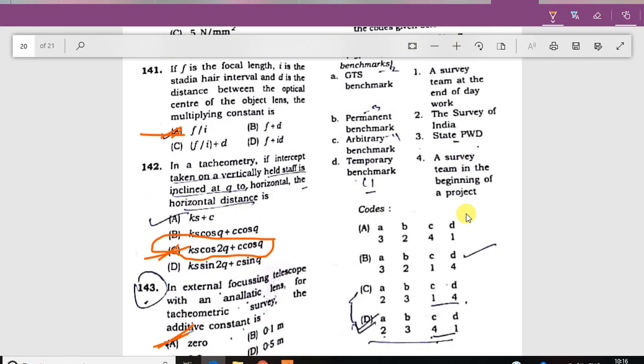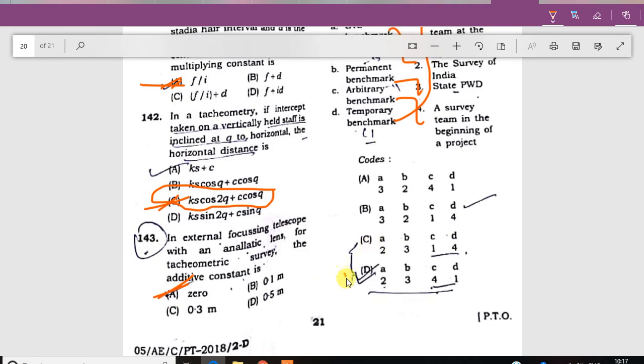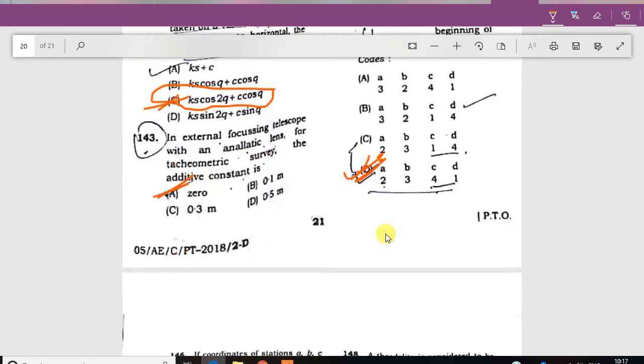Match the question. GTS benchmark is Survey of India. Permanent benchmark is PWD. Arbitrary benchmark is survey team at beginning of project. Temporary benchmark. The answer is D.